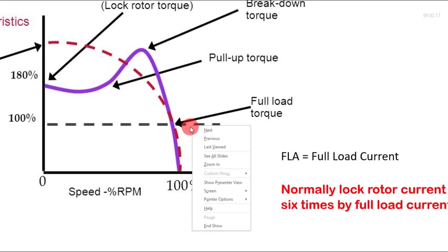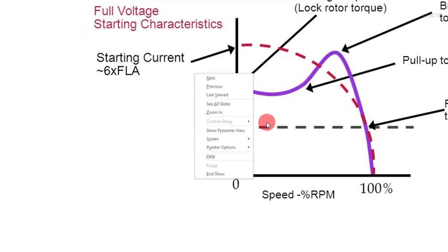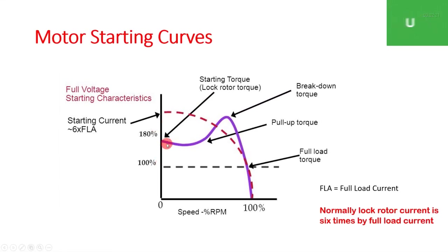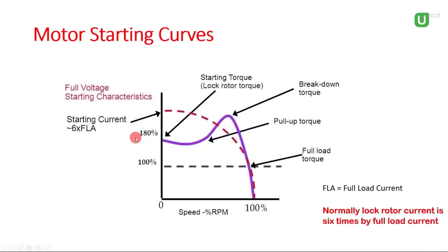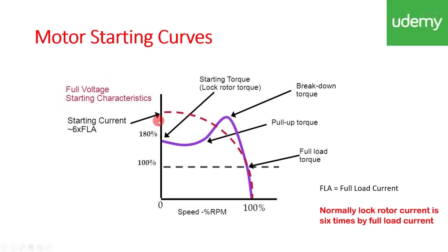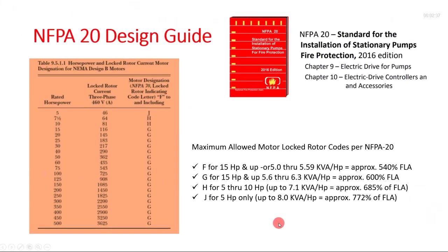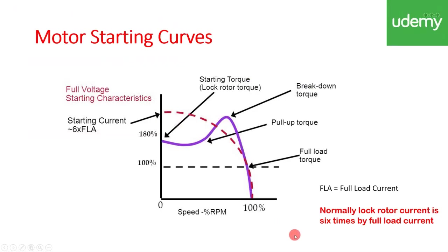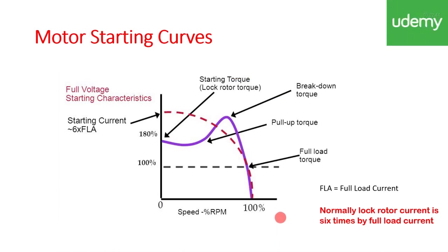This is the torque curve — this is full torque and this is lock rotor torque. According to the lock rotor curve, your lock rotor current is six times your full load current. Normally, lock rotor current is six times the full load current.